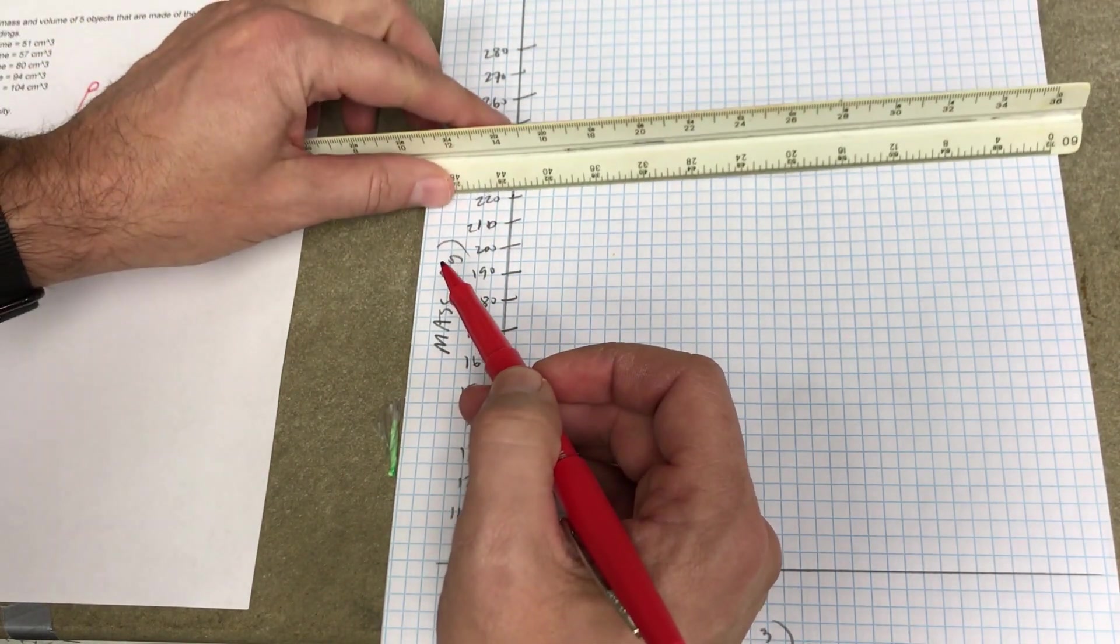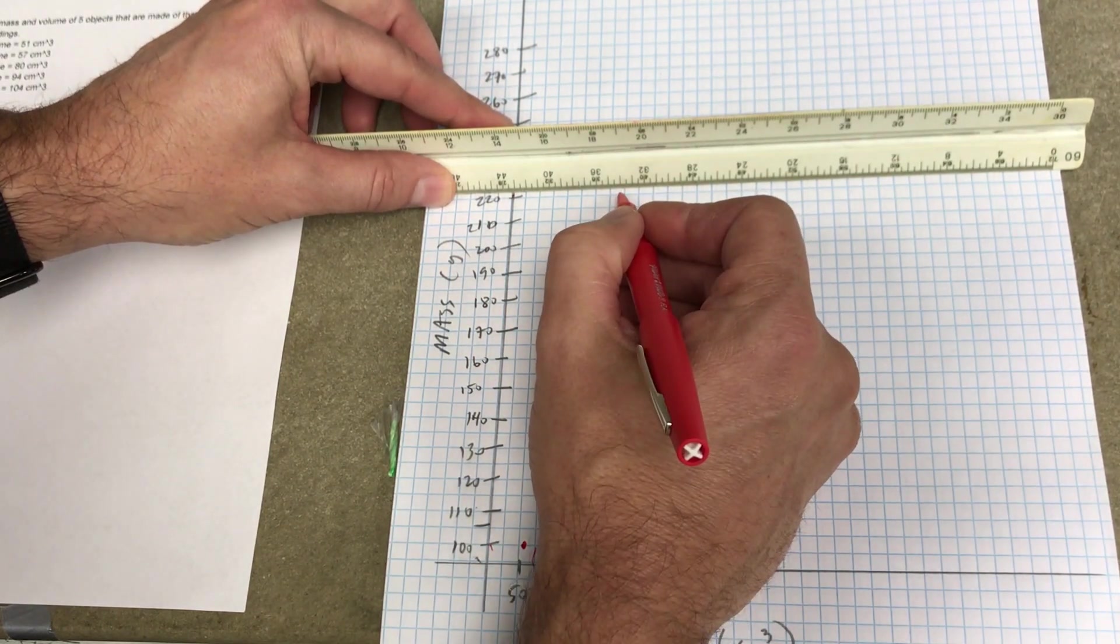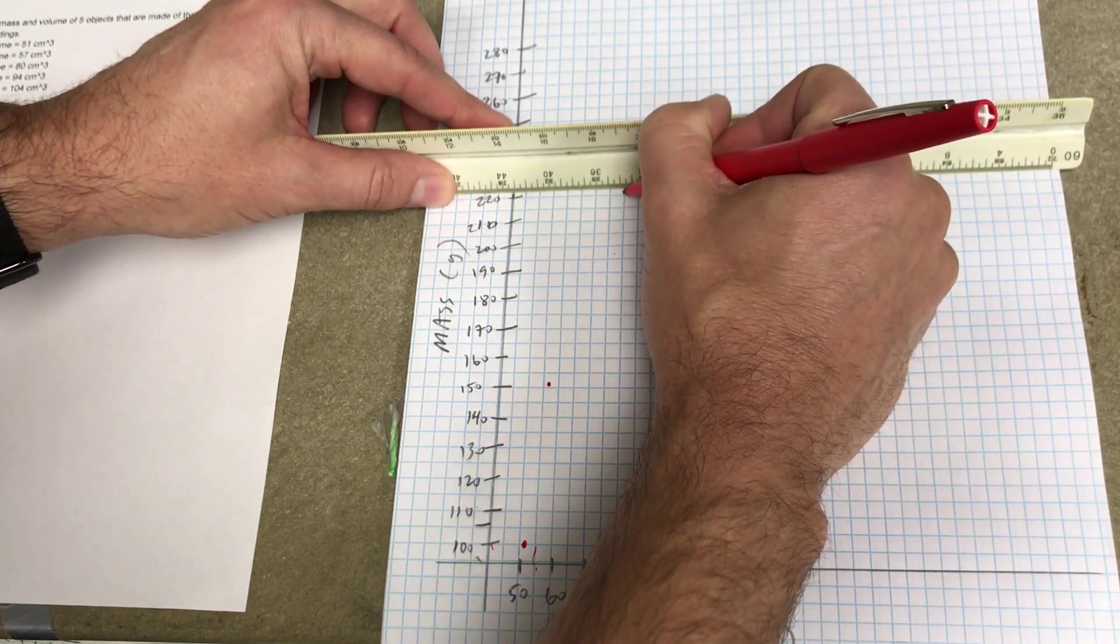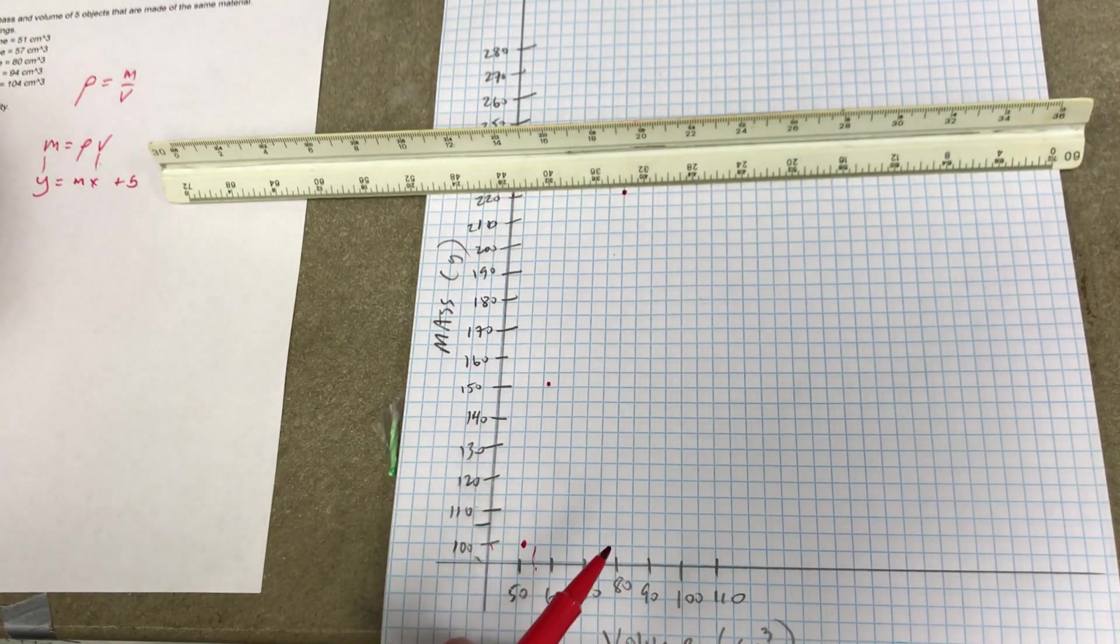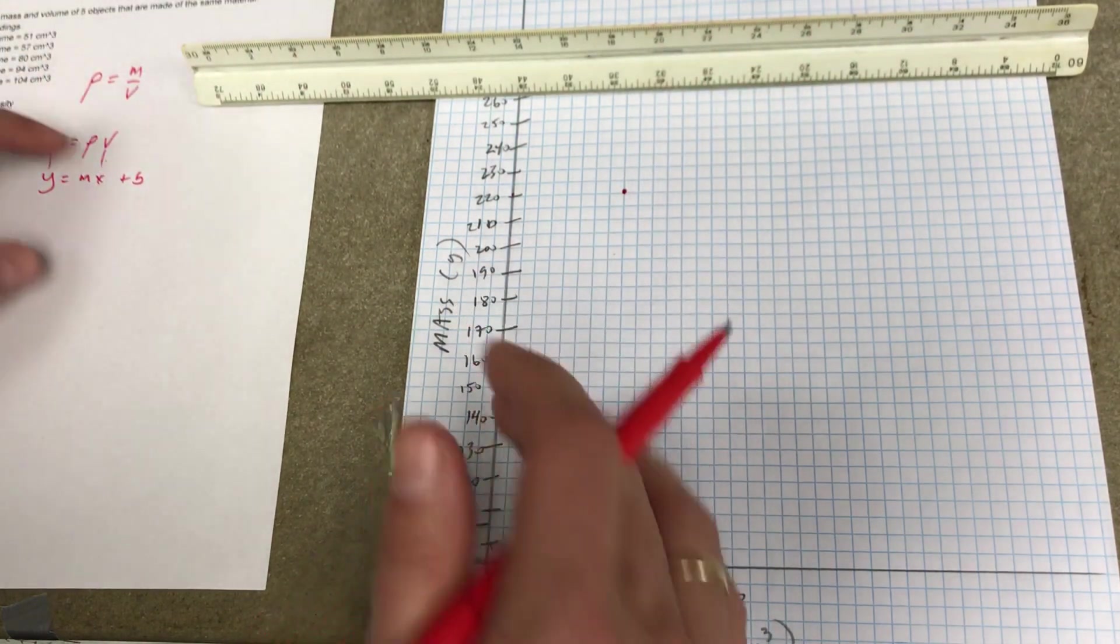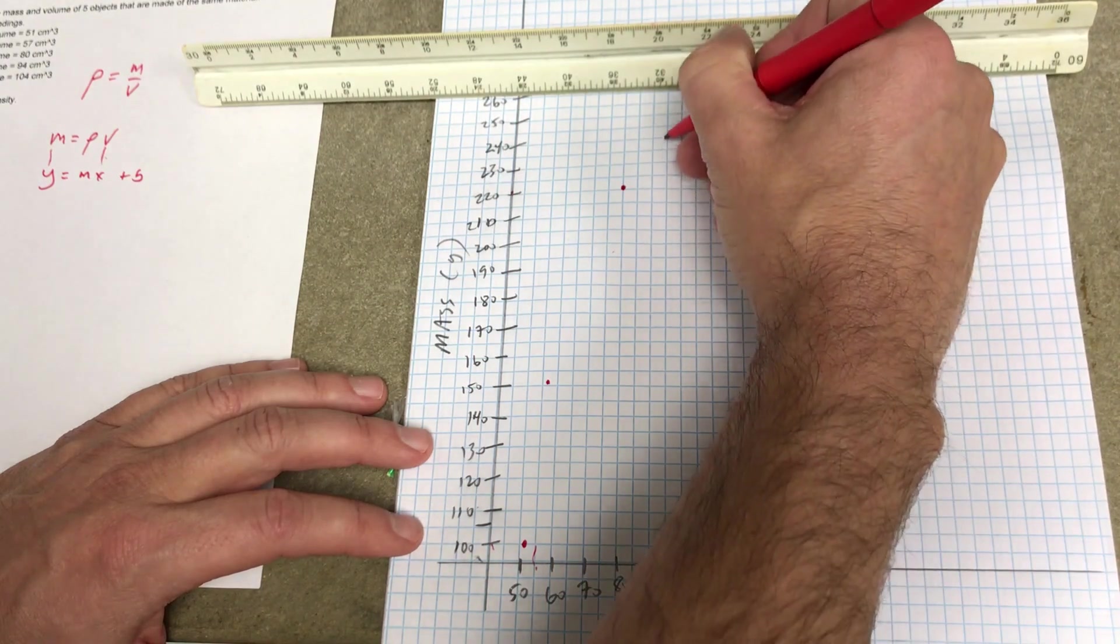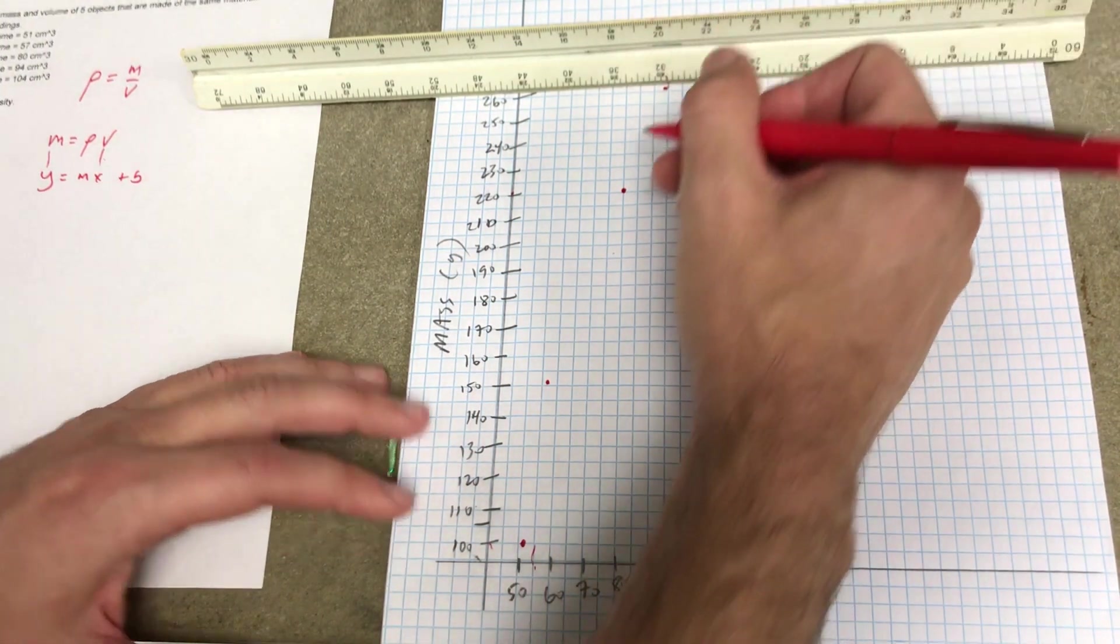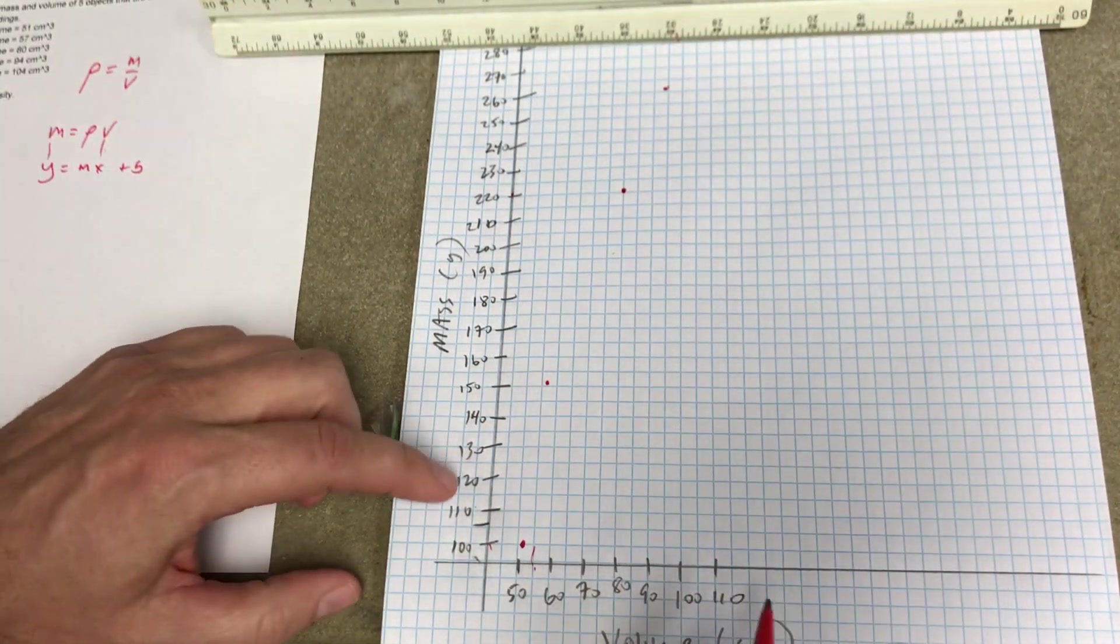Let's use this, 222 and 80. Wait, 80 is right there. Didn't that be perfect? 261 and 94. So it's right there on the middle, a little bit below it. So it's about right there. And then 280 and 104.